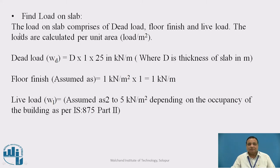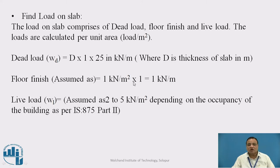Step 3: Find the load on the slab. The load comprises dead load, floor finish, and live load, calculated per unit area (kN/m²). Dead load WD = overall depth of slab in metres × 25 kN/m³, giving the value in kN/m². Floor finish = 1 kN/m². Live load is assumed between 2 to 5 kN/m² depending upon occupancy: residential = 2 kN/m², public = 3 kN/m², library = 5 kN/m².